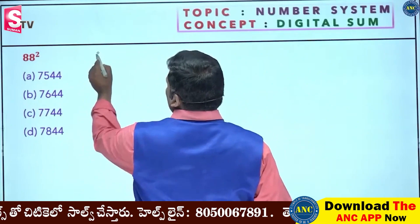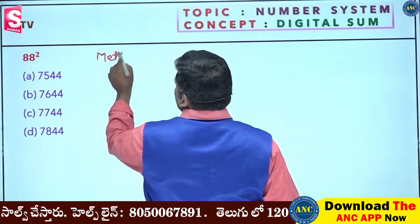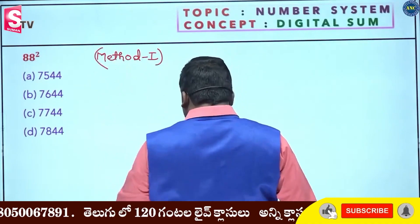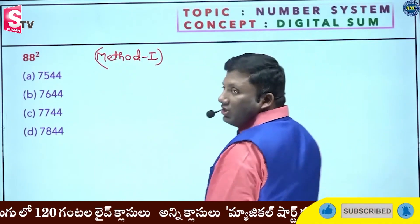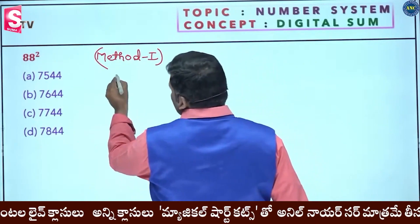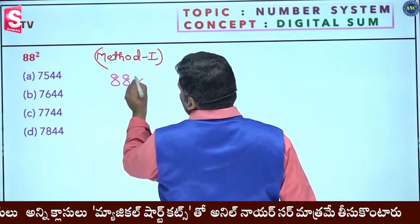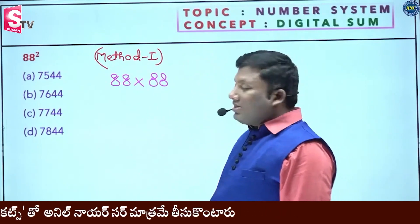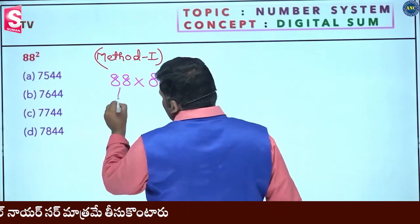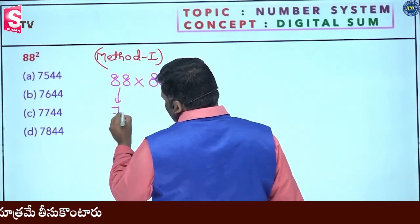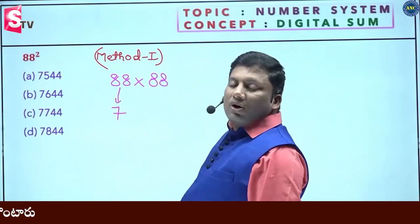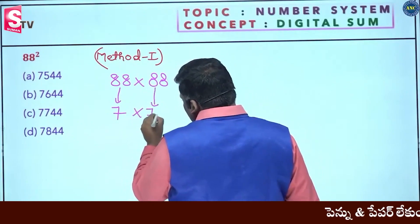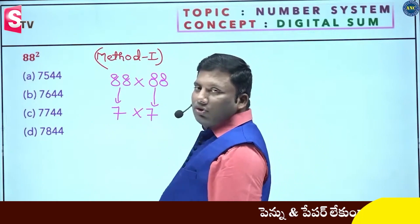Method 1: 88 whole square, that is 88 into 88. Now listen carefully. 8 plus 8 is 16. The digital sum of 16 is 1 plus 6 equals 7.